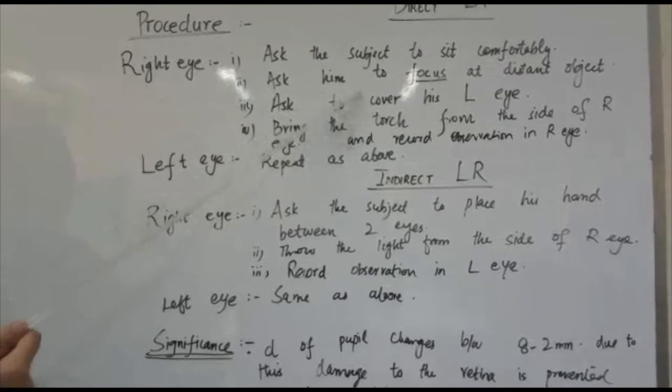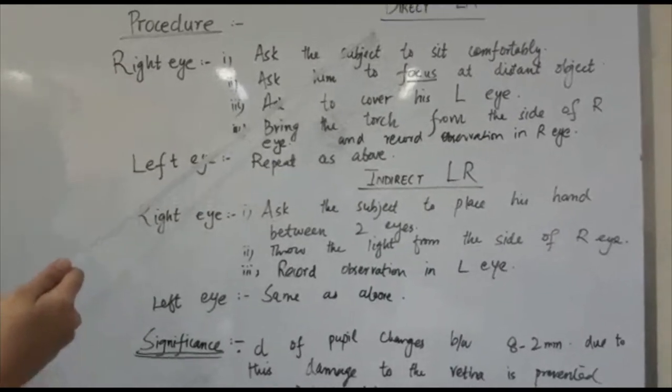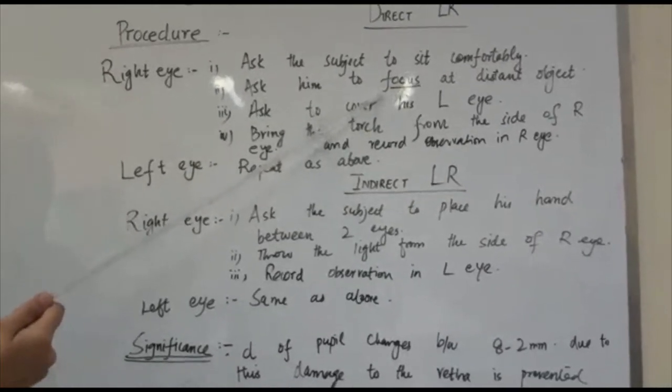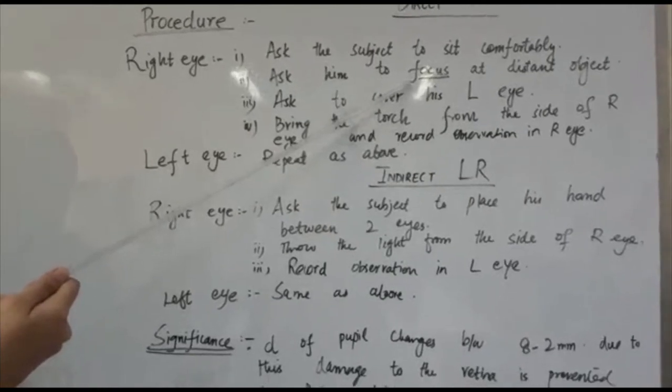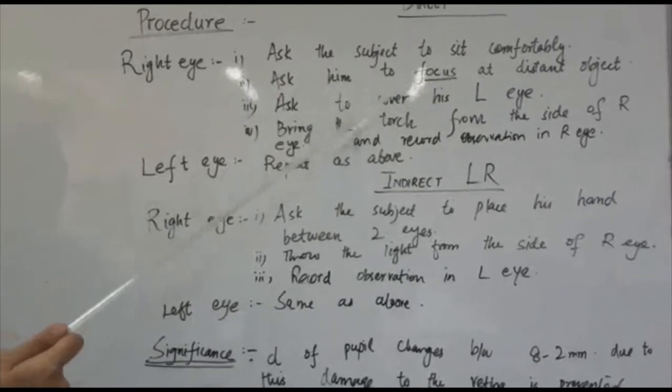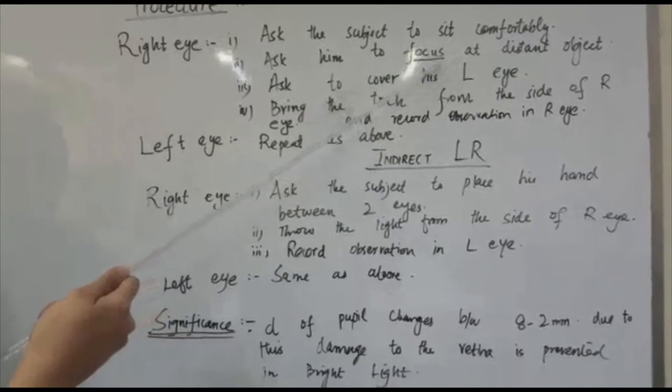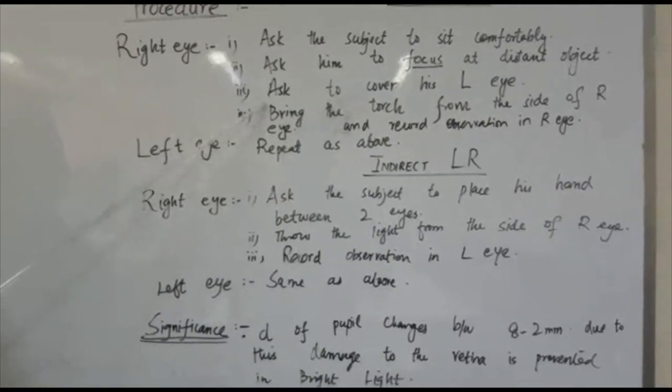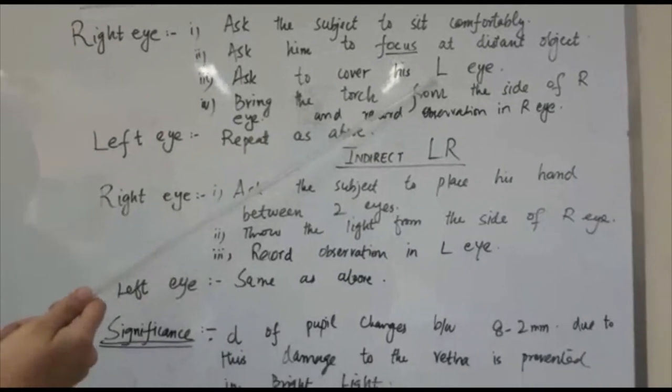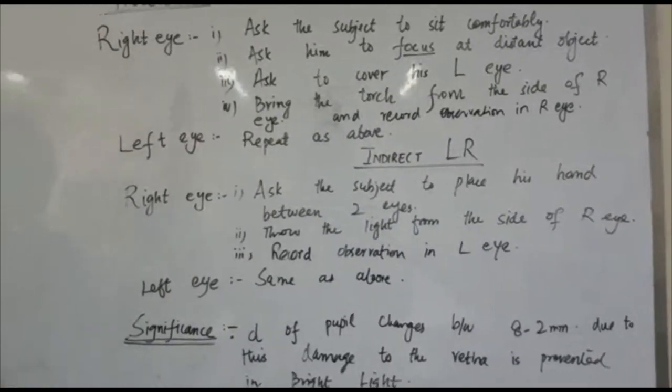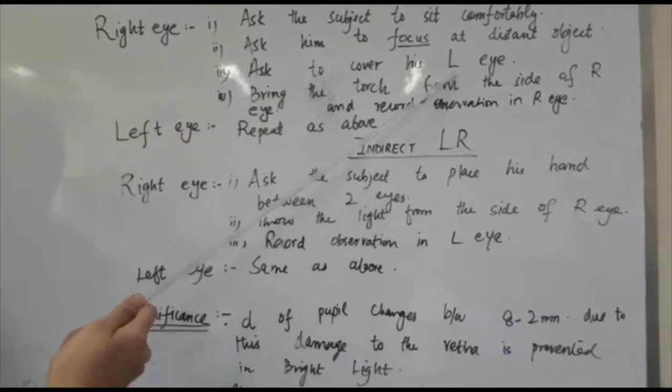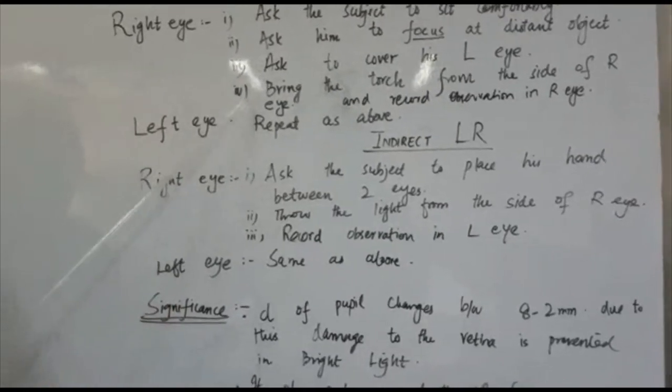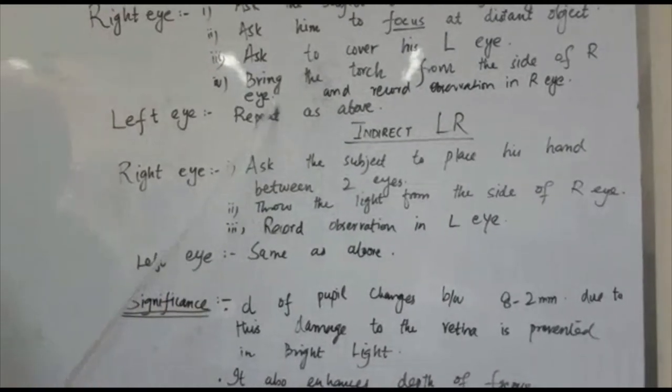Why are you performing this step? So that direct light reflex should not be confused with the accommodation reflex and the accommodation reflex for any nearby object is omitted. In the third step, ask the subject to cover his opposite eye, or if you are performing on the right eye, ask him to cover the left eye.